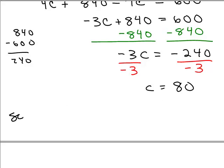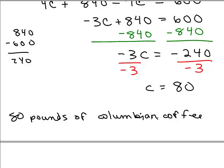So C stands for what? So we know we're going to use 80 pounds of the Colombian coffee. I remembered that C stood for the pounds of Colombian coffee because I used that letter C. Now, we also need to find out how much of the French coffee.